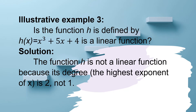Illustrative example number three: Is the function h defined by h of x equals x raised to 3 plus 5x plus 4 a linear function? The function h is not a linear function because its degree — the highest exponent of x — is 3, not 1. We can call a function a linear function only if its highest exponent is 1, because linear functions always have the highest exponent of 1.